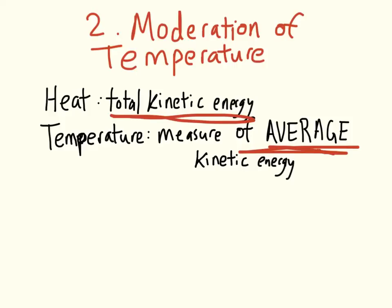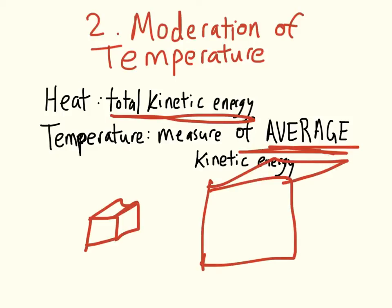Let's say we have two cubes. We have this tiny cube here, and then we have this huge cube right here. They are made up of the same material, they have the same temperature. Now, the only difference between the two cubes is the volume.